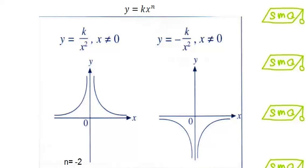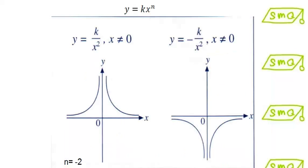For the graph of y equals k over x squared where n is equal to negative 2, the curves must not touch x equals 0 as well as y equals 0. Note that for equations with a negative coefficient, the graph is obtained by reflecting the positive graph about the x-axis.